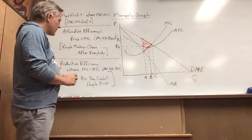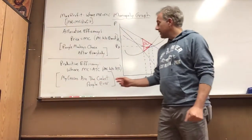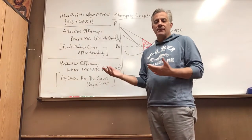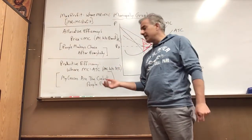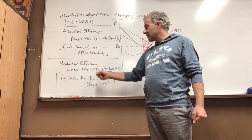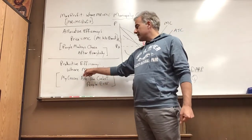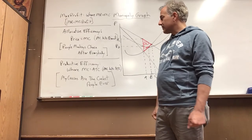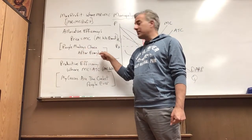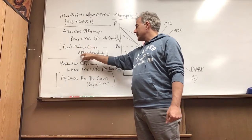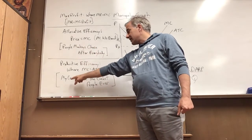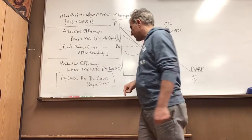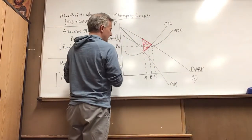We're going to talk about something new: productive efficiency. This is essentially the quantity at which the average total cost is the lowest. The average total cost, that's what's going in - we want that to be as low as possible. Because MC hammers ATC at its lowest point, that intersection is productively efficient. P equals MC is allocatively efficient, and for productive efficiency, MC equals ATC, productively efficient. Where is that? That's right here at quantity B.